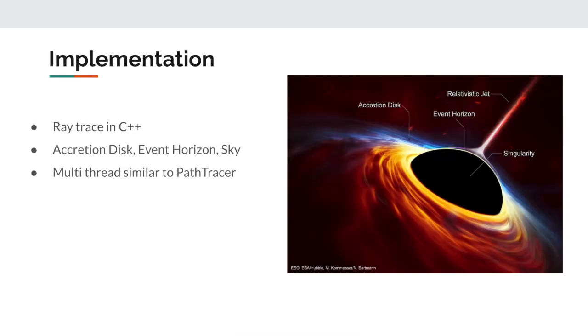Our scene consists of primitives which the ray can intersect. These are the main parts of a black hole: the accretion disk, the event horizon, and the background sky.